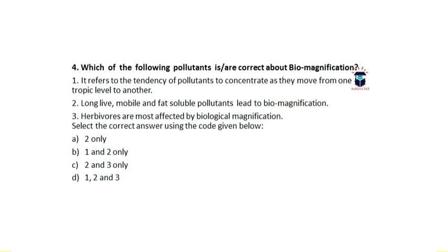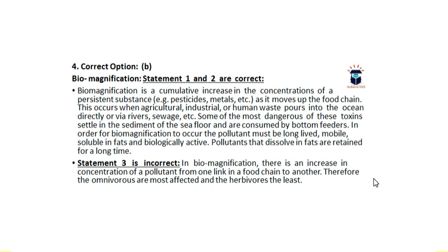The trophic level above will eat a large number of prey, so pollutants concentrated across organisms at a lower trophic level become further concentrated in the predator eating all that prey. Statement two is also correct — long-lived, mobile, and fat-soluble pollutants lead to biomagnification. Because they are fat-soluble, they are not flushed away and are stored in the body itself. The answer is B — statements one and two only.